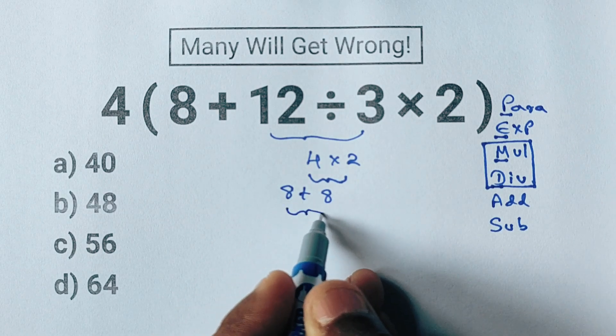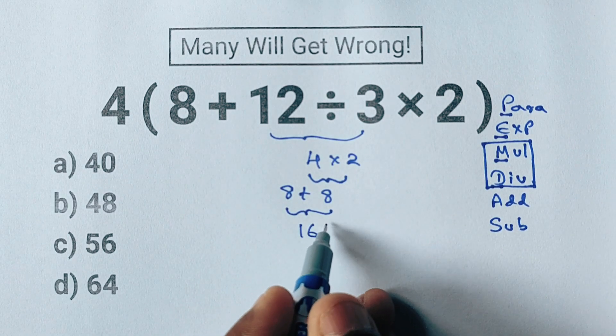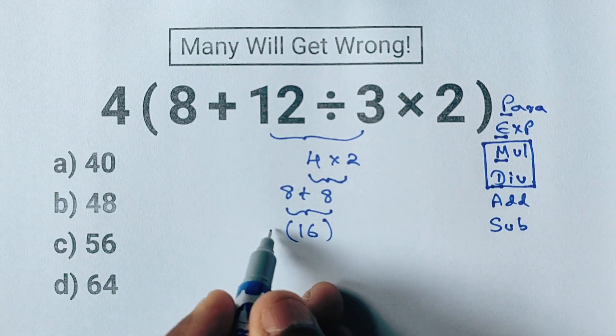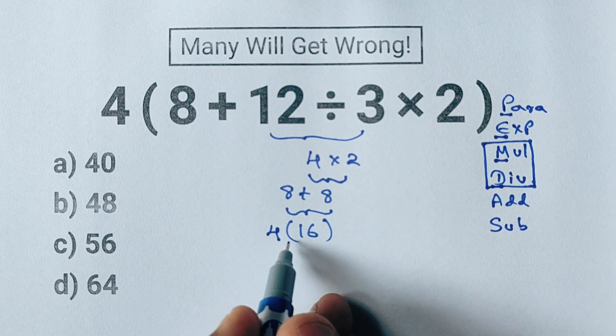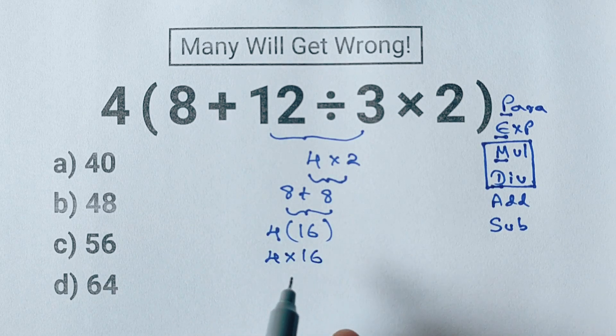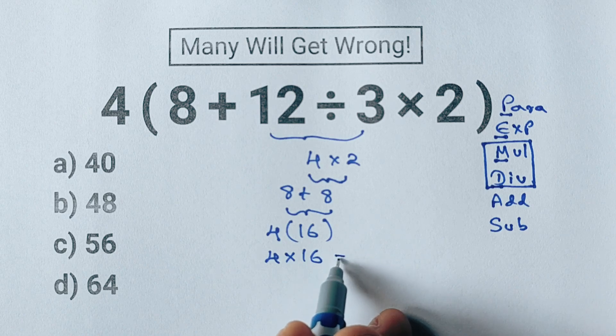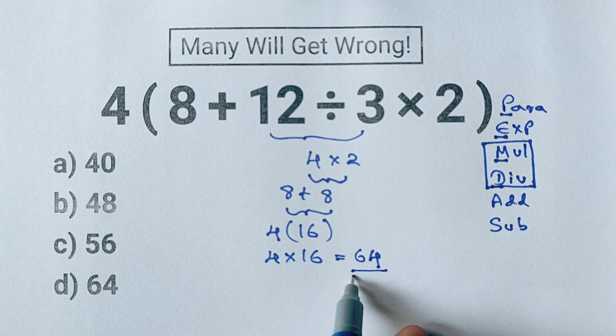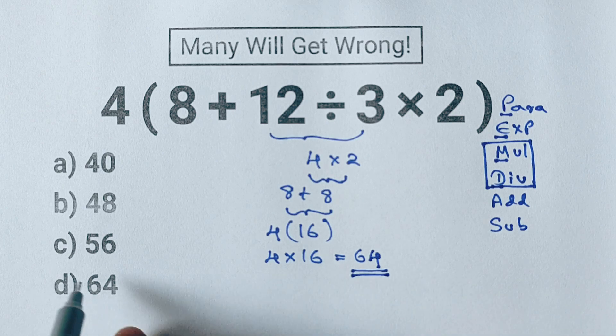We're almost there. Outside the parenthesis we have 4, and when a number is placed next to parenthesis it means multiplication. So 4 × 16 equals 64. That means the correct answer is D) 64.